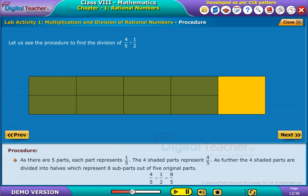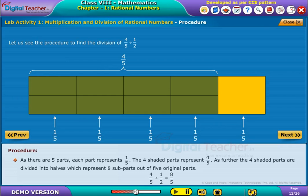As there are five parts, each part represents 1 by 5. The four shaded parts represent 4 by 5. As further, the four shaded parts are divided into halves, which represent 8 sub-parts out of 5 original parts.